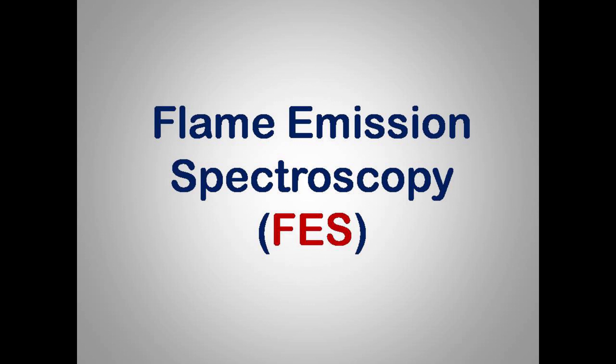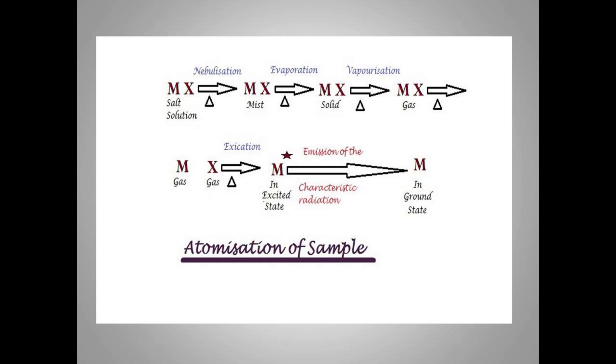After the atomization, the sample is able to emit light. Let us see the atomization of the sample as shown here in the diagram. MX here is a general example for a salt where M is a metal and X is its salt. For example, M can be potassium and X can be chlorine. Flame photometry requires salt in solution form, which is nebulized into the flame. After reaching the flame, this solution is converted into smaller water droplets, which are known as the mist.